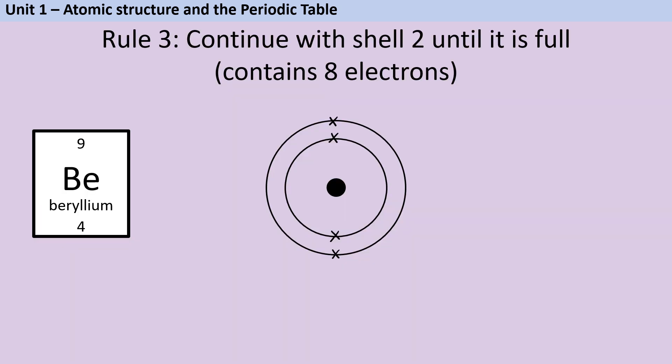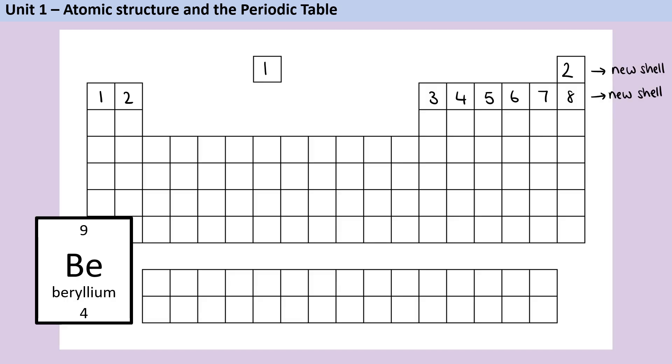Beryllium is going to have two electrons in the first shell and then two electrons in the second shell. Now it's worth pointing out here that if you need to know how many electrons an element has in its outer shell and you don't have time to draw the full diagram or you don't want to, there is a quick way that you can figure this out.